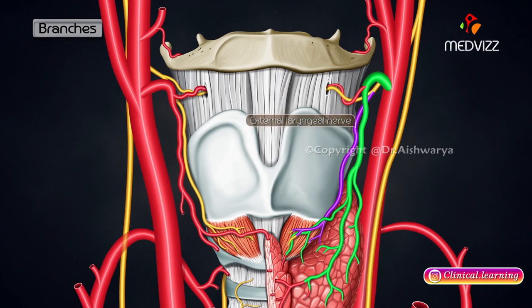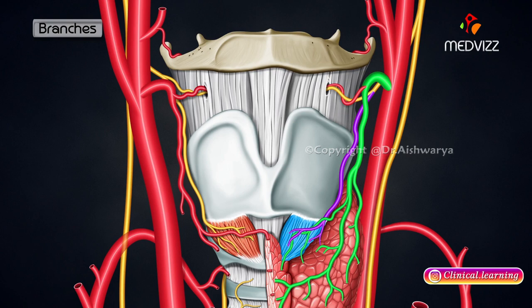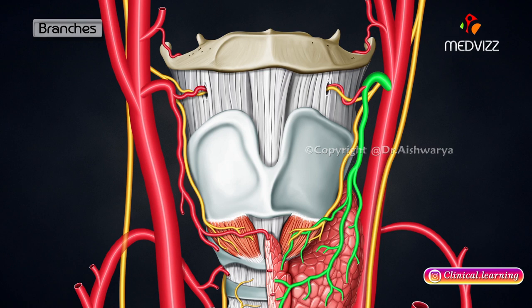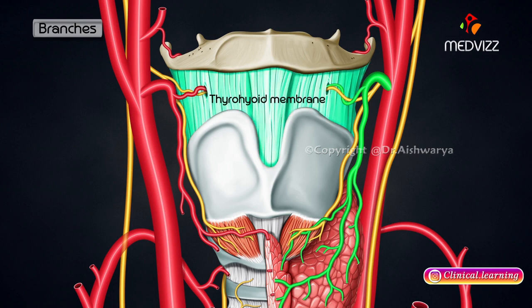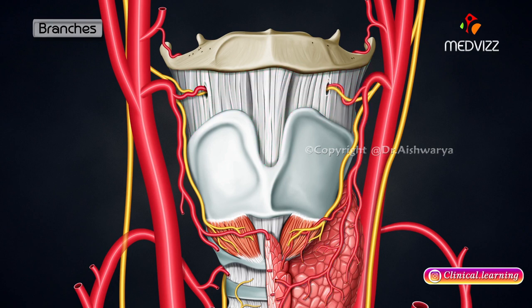The superior thyroid artery is in close relationship to the external laryngeal nerve, which supplies the cricothyroid muscle. This is important during thyroid surgery, where the artery and nerve are close to each other but diverge slightly near the gland. To avoid injury to the nerve, the superior thyroid artery is ligated as near to the gland as possible. It also gives off the superior laryngeal artery, which pierces the thyrohyoid membrane in company with the internal laryngeal nerve.